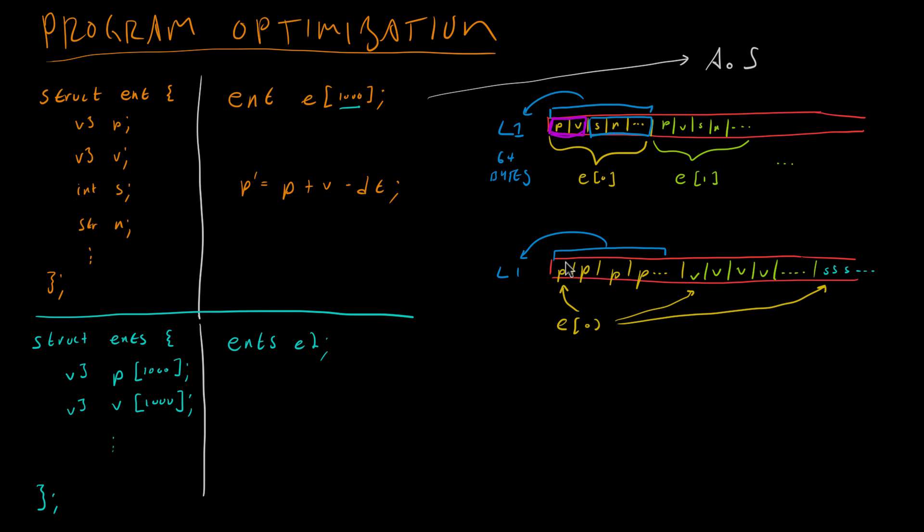But now look what happens when we do this time step. We're gonna load in 64 bytes into the L1 cache but we just get a bunch of positions, we get only positions, which is great because we're gonna do the position for the first entity and then we're gonna move on to the second entity and the position for that entity is right there in the cache line already. And then the position for the next entity is still in the cache line. Same thing for velocities. We're gonna load in 64 bytes worth of velocities into L1 and we're gonna have a bunch of extra velocities already there in memory. So we can do a bunch more work for every cache line that we load in. That's already a huge savings by doing it this way.